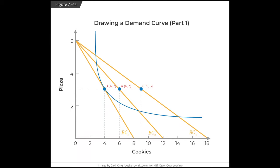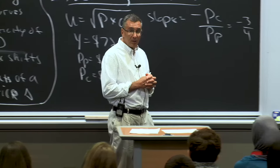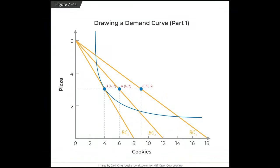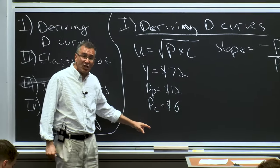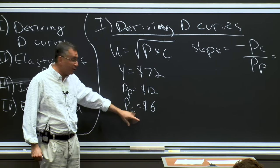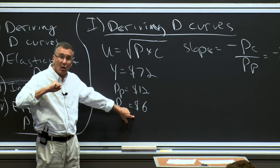All three of those points were derived by redoing the optimization from last time — taking this utility function, maximizing it subject to a budget constraint, and changing the price of cookies. You've now derived the demand curve. The demand curve is the relationship between price and quantity. When the price goes up, quantity of cookies goes down; when the price goes down, quantity goes up. Shifting to the right-hand side of figure 4-1, I just graphed those three points — price versus cookies demanded.